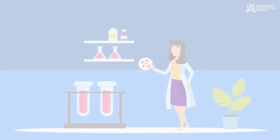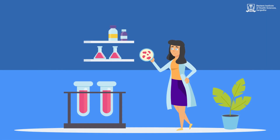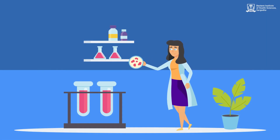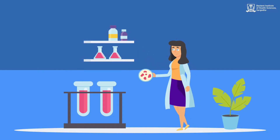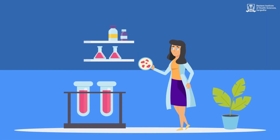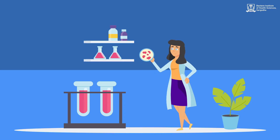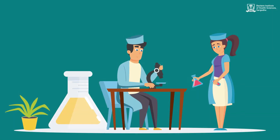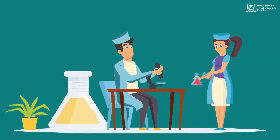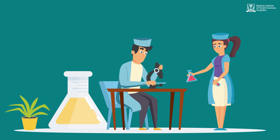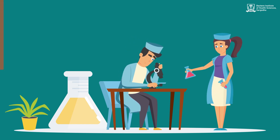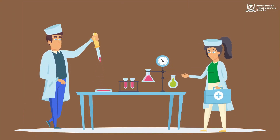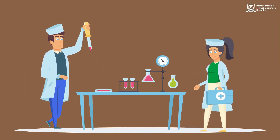They match blood for transfusions and test for drug levels in the blood that show how a patient is responding to treatment. Technologists also prepare specimens for examination, count cells, look for abnormal cells in blood and body fluids, and use microscopes, cell counters, and other sophisticated laboratory equipment.